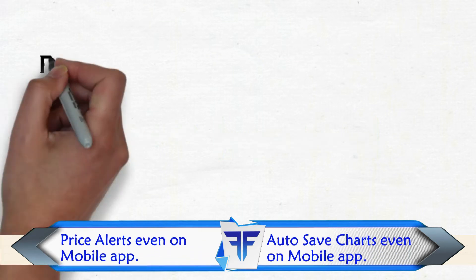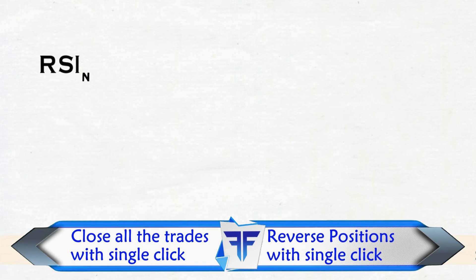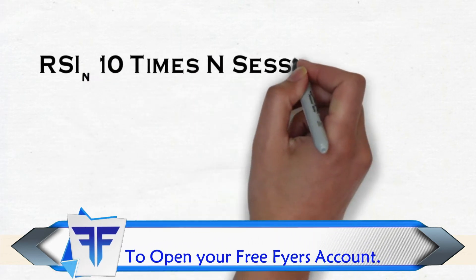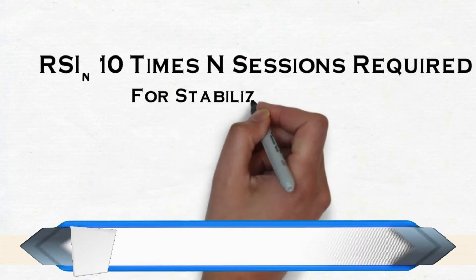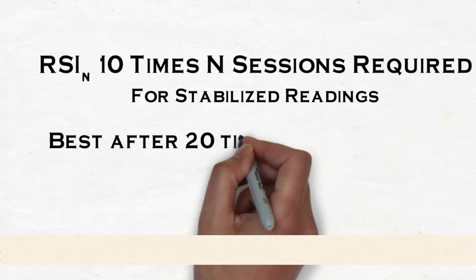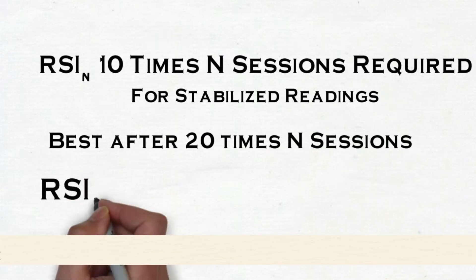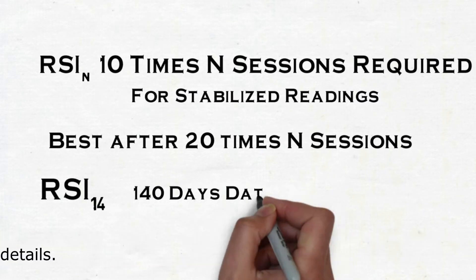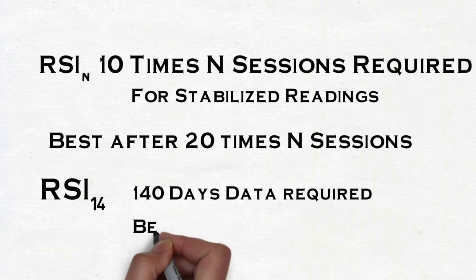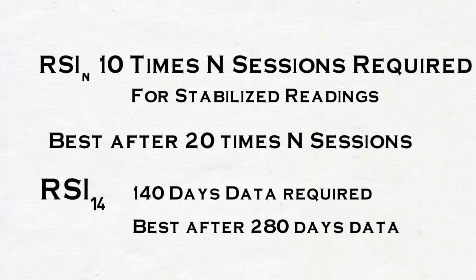Important point: if you want to calculate RSI for N periods, the data required is 10 times N sessions of closing prices. For the best results, it's good to take 20 times N sessions of closing prices. So for a 14-period RSI, 140 days of data is required, and for best results, 280 days is needed. If you want to calculate RSI for a freshly listed or IPO company, you should not do an RSI analysis within 140 days.